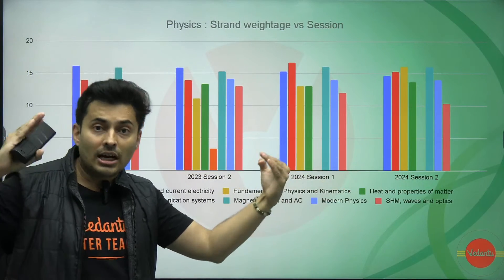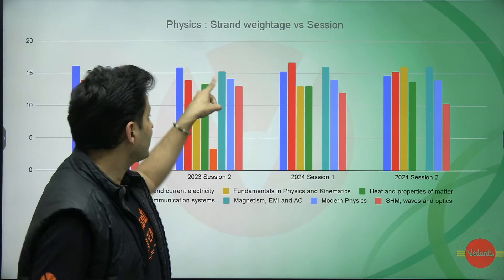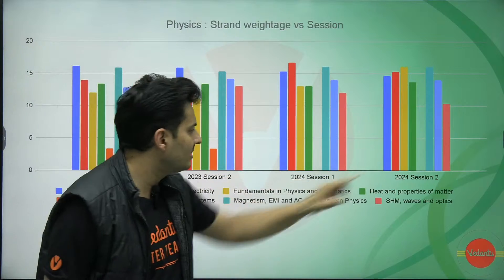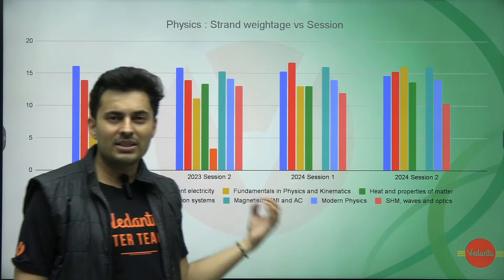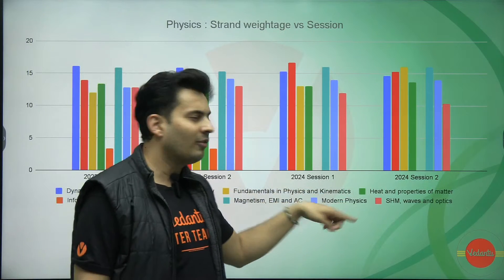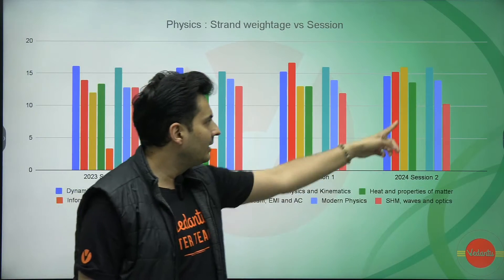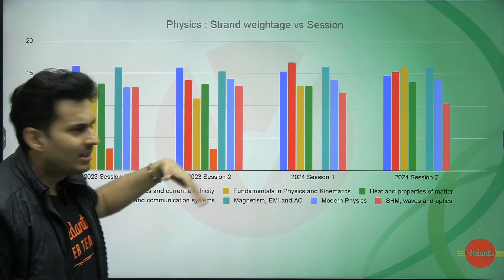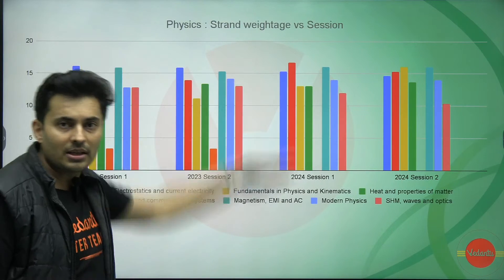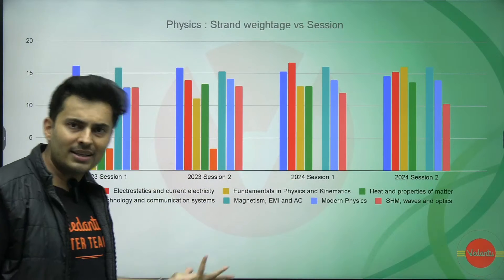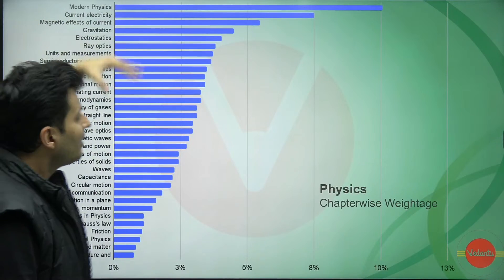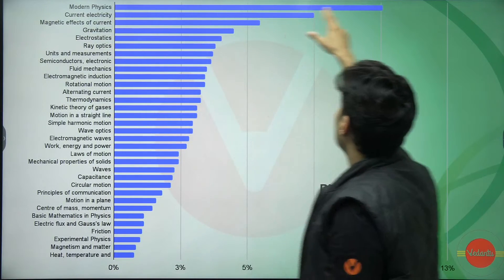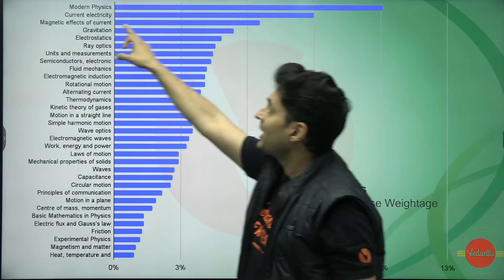The magnetism unit — covering Biot-Savart's law through AC circuits, including EMI and AC — is heavily contributing and very important. Kinematics, fundamentals of physics (units, dimensions, basic maths, vectors, 1D and 2D motion, relative motion), and heat/thermal properties including calorimetry, KTG, and thermodynamics are medium weightage contributors. Semiconductors and logic gates always appear but are not heavily contributing. So there isn't a situation where one topic is extremely high and another extremely low.